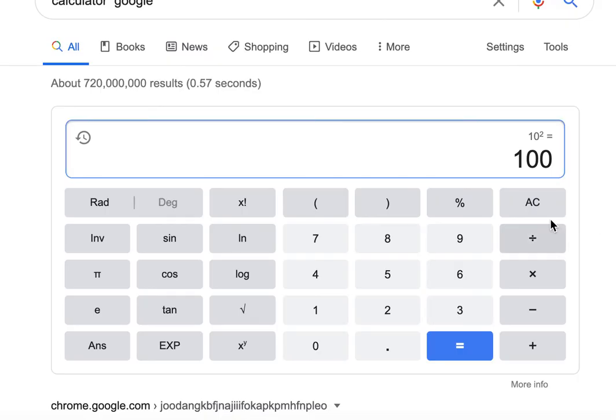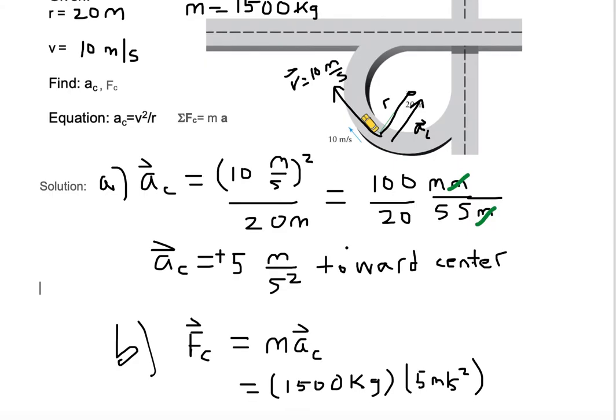So I'll come to my calculator, clear it out. We want to put in 1,500 and multiply it by 5. And we get 7,500 as our answer.